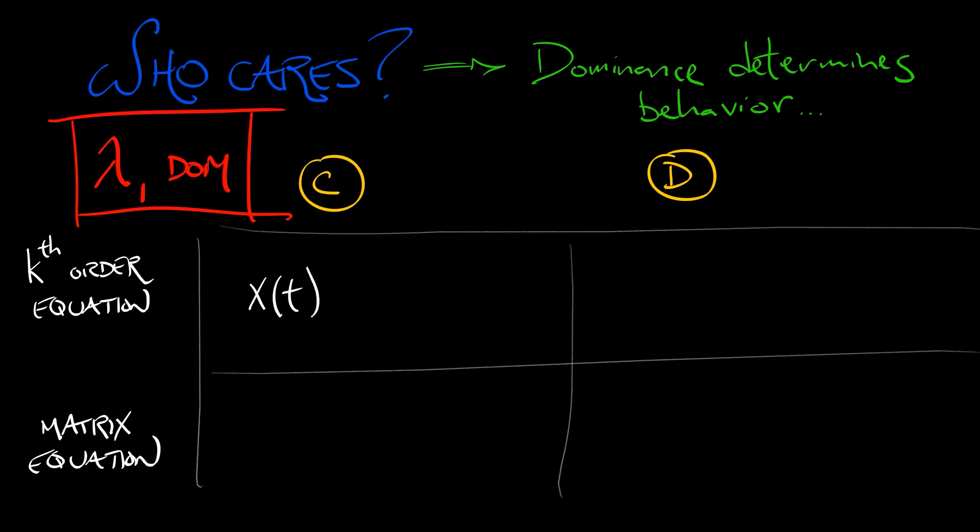In continuous time, a k-th order equation, your solution x of t is going to asymptotically look like some constant times e to the lambda 1t. In discrete time, xn is going to approach c some constant times lambda 1 to the n.